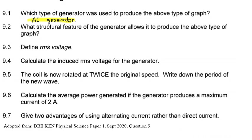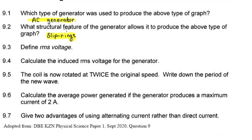Question 9.2 asks what structural feature of the generator allows it to produce that type of graph. We spoke about this in the previous video — whenever we want to create something that is AC, what we need to use is slip rings. So if we use slip rings, then that device, whether a generator or motor, will produce this AC voltage. The feature they're looking for here for AC is slip rings.